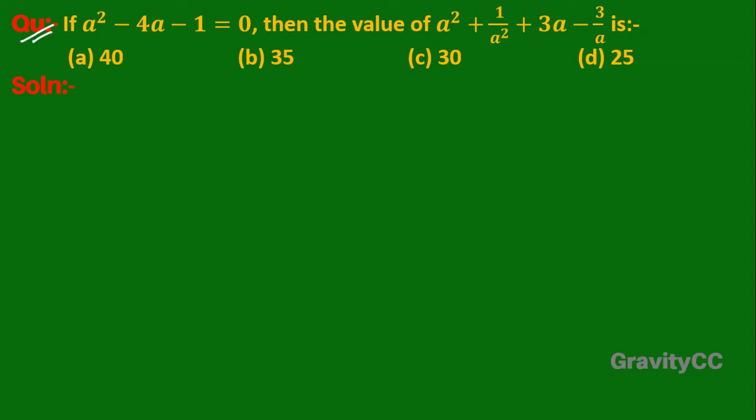The question states: if a² - 4a - 1 = 0, then find the value of a² + 1/a² + 3a - 3/a. Given that a² - 4a - 1 = 0.